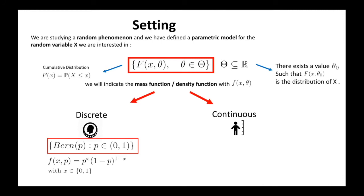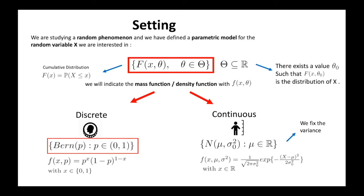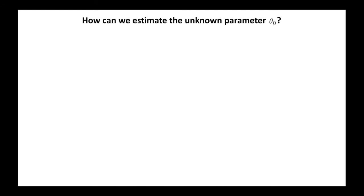For the continuous case, we consider as random phenomenon the heights of men in Canada. From previous studies of heights, we know that the distribution is normal, and for simplicity we assume also to know the variance. The density function is the formula on the screen, and we indicate the parametric model with N(mu, sigma squared), where mu is the unknown parameter and is the mean of the distribution. The problem is: how can we find the unknown parameter theta_0? What we have to do is collect a sample from the event and then try to estimate it. We cannot measure the heights of all men in Canada or throw the coin an infinite number of times, so we must be satisfied just with a sample and an estimation.